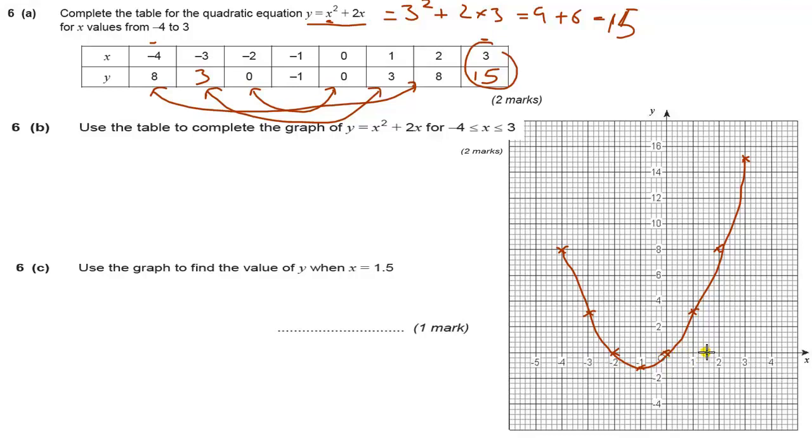If I draw a line from there up to the graph, and then my graph's not particularly well drawn, but where it touches the graph, draw a line across to the y-axis, you can then read off that value. So whatever value that is there. On my graph, that looks about 5.